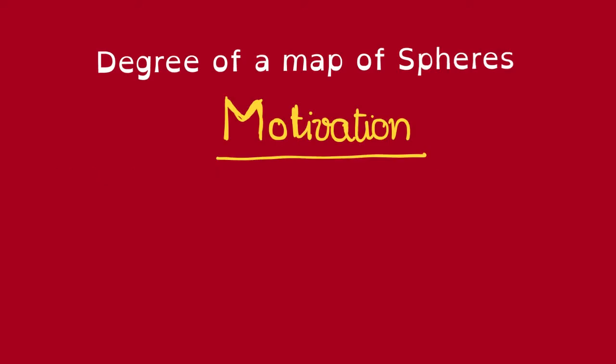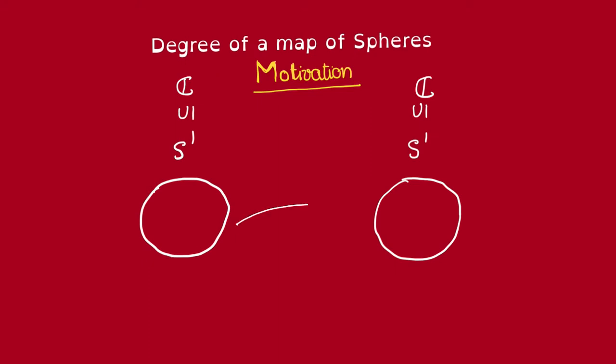Let's look at the case of the unit circle inside the complex plane. Let's look at the power map given by z maps to z to the d.